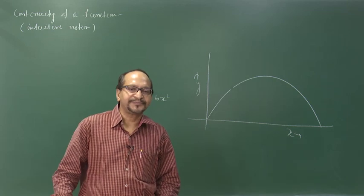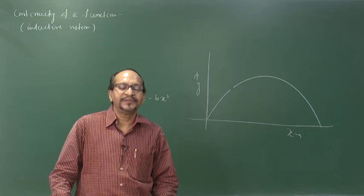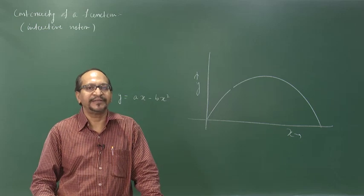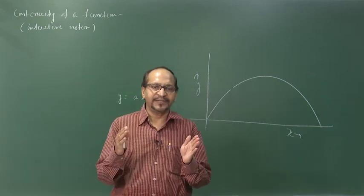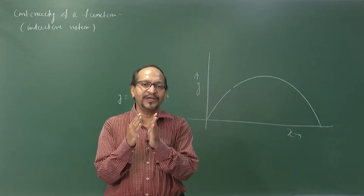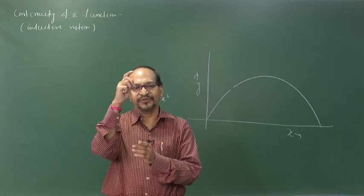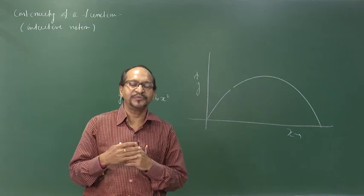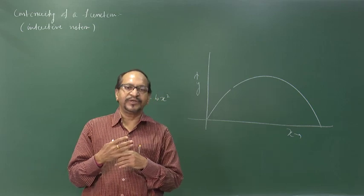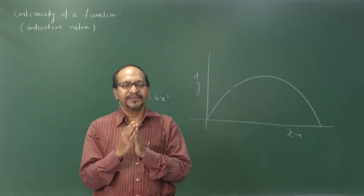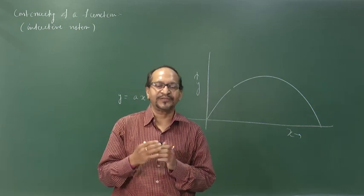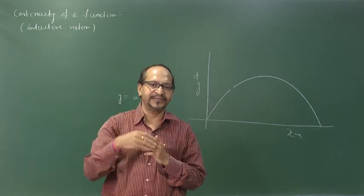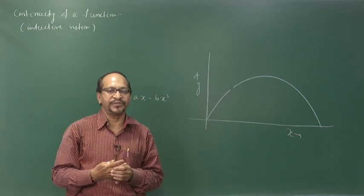If there is a break in the curve, we say there is a discontinuity. If there is no break, the function is continuous. When a function is continuous, when the independent variable changes through a very small value, the dependent variable also changes through a very small value — there is no sudden change. When x changes by a small magnitude, the corresponding function value f(x) also changes by a very small value.